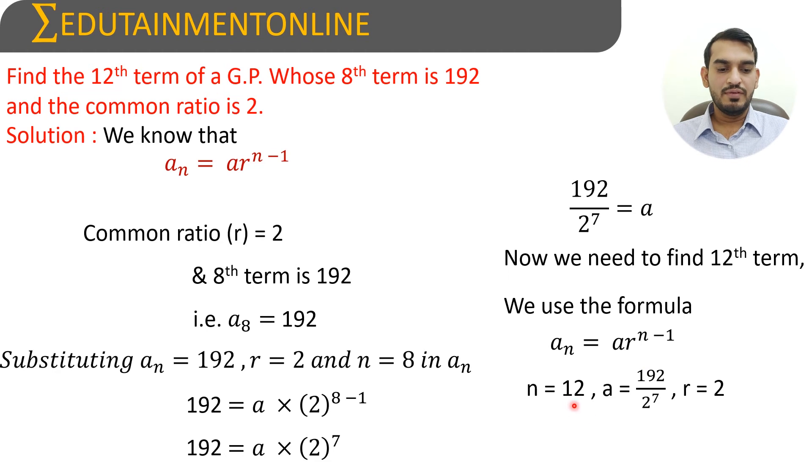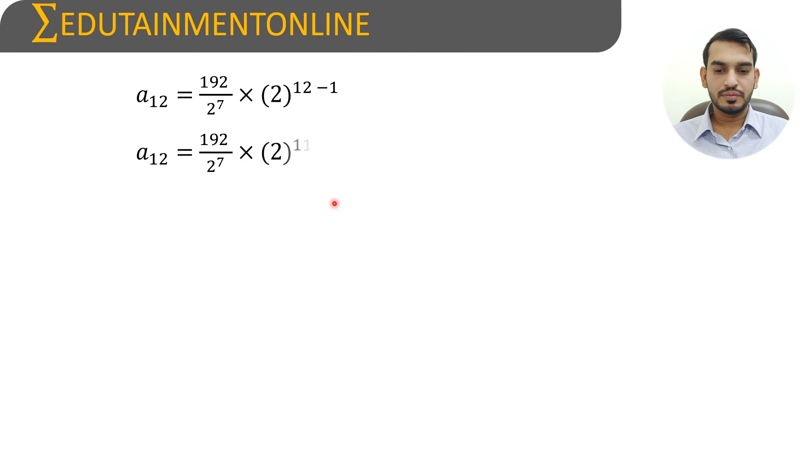So in place of n we can use 12, that will be 12 minus 1, a into r power 12 minus 1, and a is 192 by 2 power 7. Now a_12 equals 192 by 2 power 7 into 2 power 12 minus 1. So 2 power 12 minus 1 is 11.